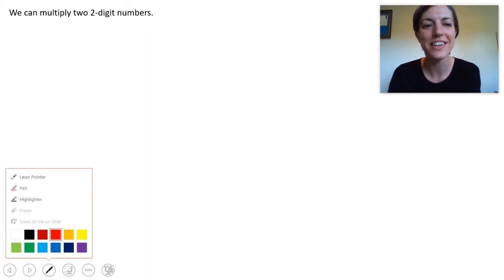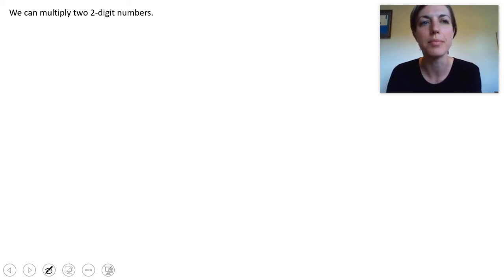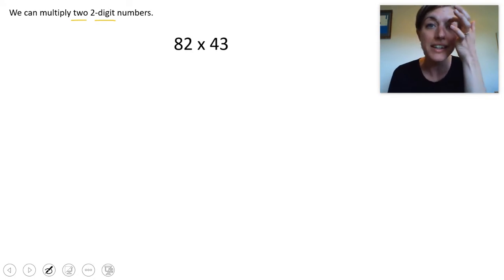Hi everyone! In this video we are going to multiply two two-digit numbers. We're going to practice with this equation 82 times 43. You see that each of these numbers has two digits in them.